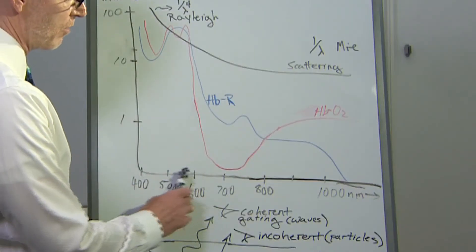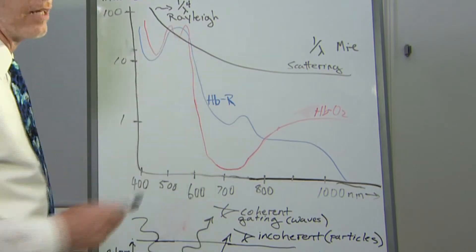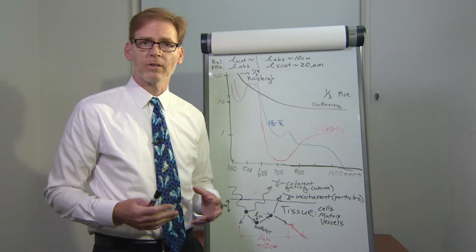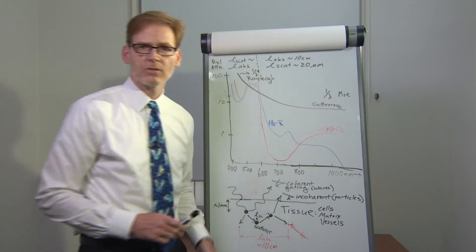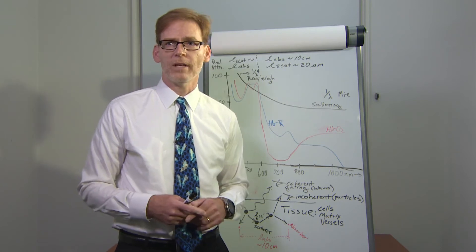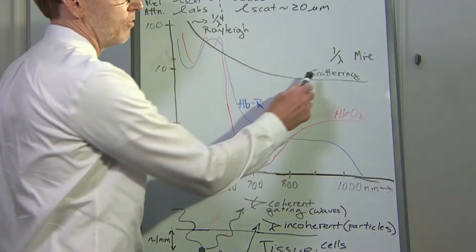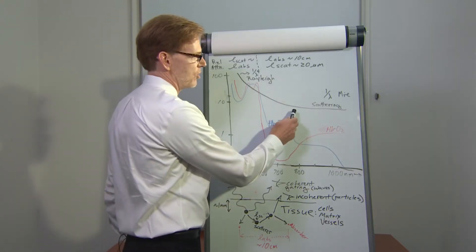In wavelengths between about 400 and 600 nanometers, light scattering is dominated by Rayleigh scatter, where the particles that are scattering are small with respect to the optical wavelength. In wavelengths above 600 nanometers or so, the light particles are large or comparable to the optical wavelength, and scattering falls off as approximately 1 over lambda, which is Mie-like scattering.